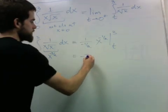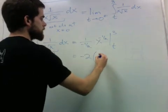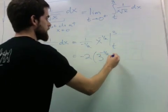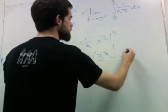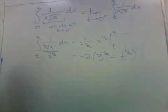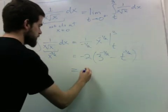Let's see, I really have negative 2 times 3 to the negative one half minus t to the negative one half.